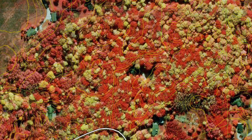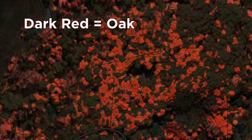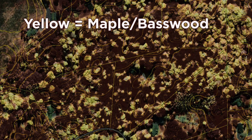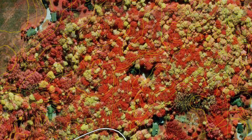I can highlight different areas of this map: the dark red is oak, pink tends to be poplar, and yellow represents maple or basswood. So even though we're maple producers, we're happy to see more than just maples in our forest, because a diverse woods is a healthy woods.